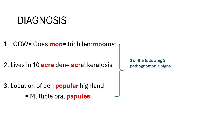For the diagnosis of Cowden Syndrome, remember where the cow lived: the cow went moo — trichilemmoma; it lived in a 10-acre den — acral keratosis; and the location of the den was in popular highlands — multiple oral papules. These are the three pathognomonic signs, and in order to diagnose Cowden Syndrome, you need at least two of these three pathognomonic signs.